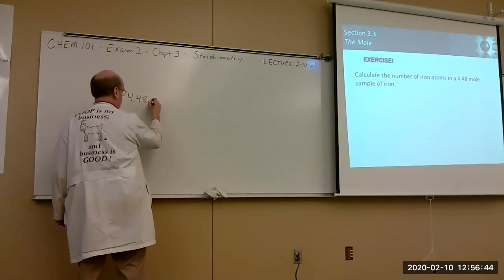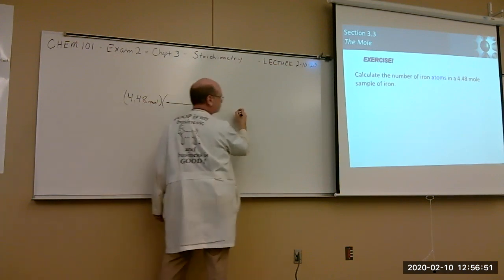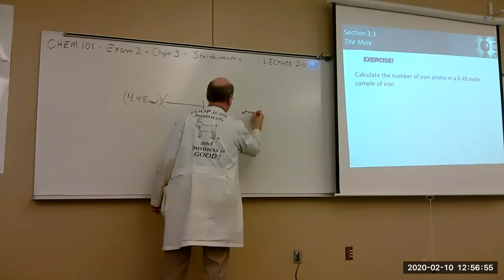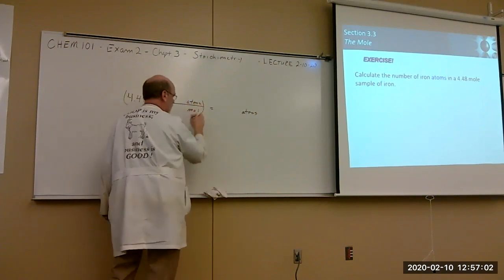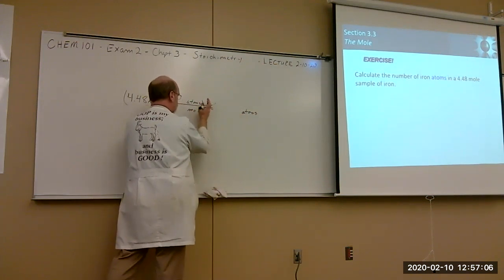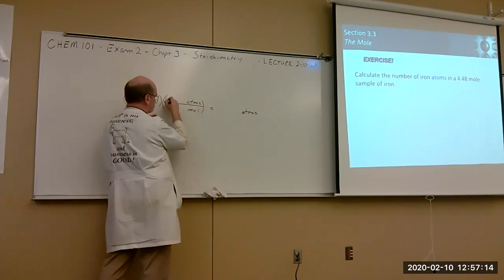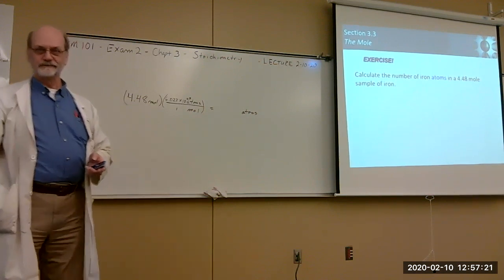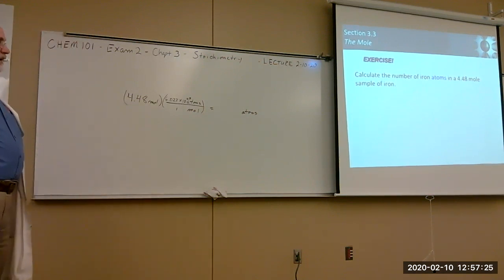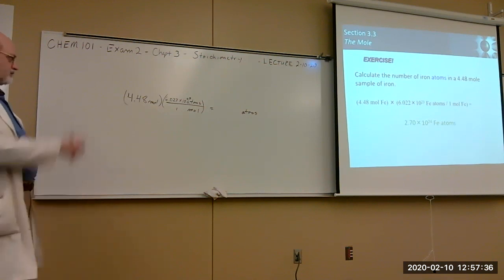If we have a 4.48-mole sample of iron, how many iron atoms do we have? This is a conversion factor problem. You need an equivalence that will cancel moles and leave you with atoms. The equivalence is 1 mole = 6.022 × 10²³ atoms. Then the rest is crunching numbers, and you end up with that many atoms.